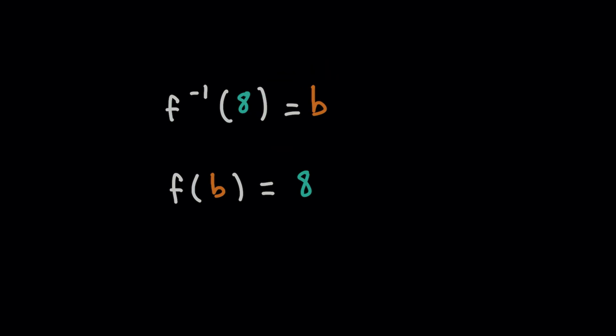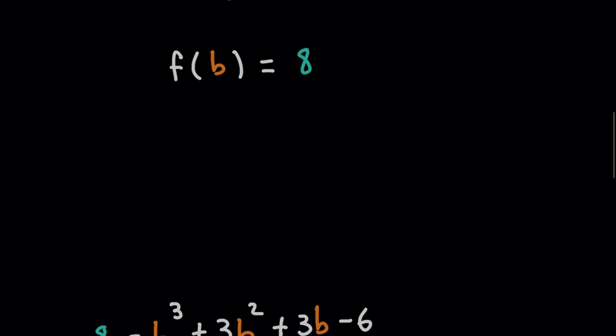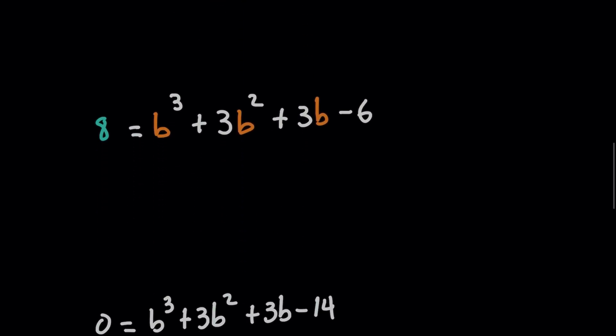And this means that for the original function, everywhere you see an X, we're going to plug in that constant B, and we're going to set the output to 8. So now all we got to do for this problem is find the value of B that makes f(X) give you an output of 8, and then we're done.